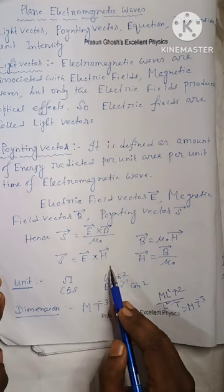The SI unit of the Poynting vector is watt per meter squared (W·m⁻²). In the CGS system, the unit is erg·s⁻¹·cm⁻². The dimensional formula is M·T⁻³.